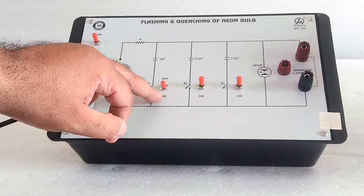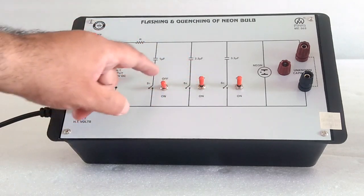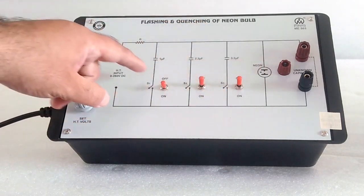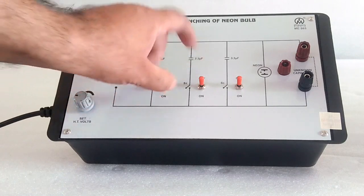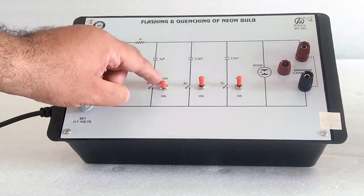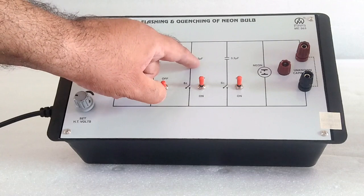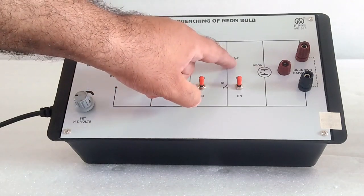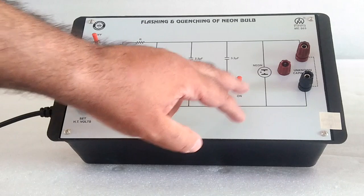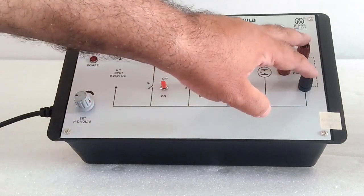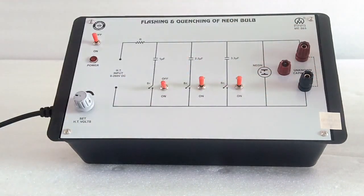When we switch on the toggle switch, the capacitor is added in parallel. Here 1 microfarad, 2.2 microfarad, and 3.3 microfarad options we have. And here is the neon bulb, here is the terminal of the unknown capacitor.